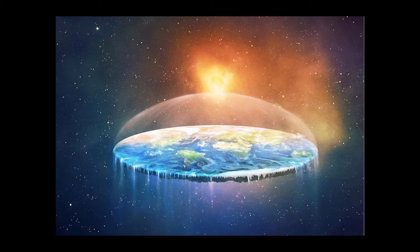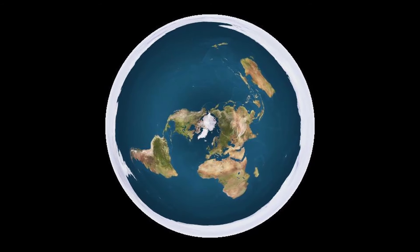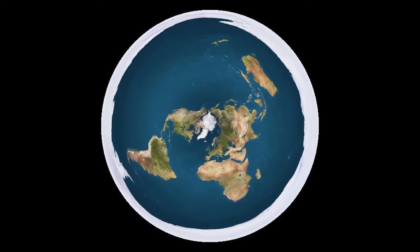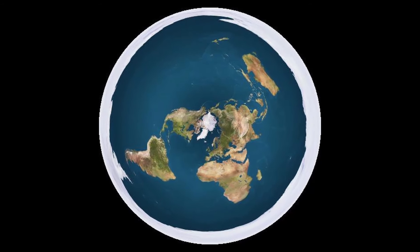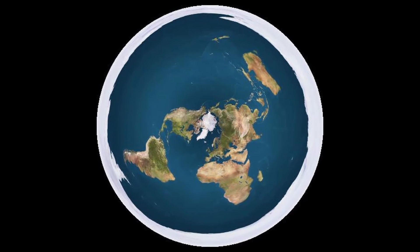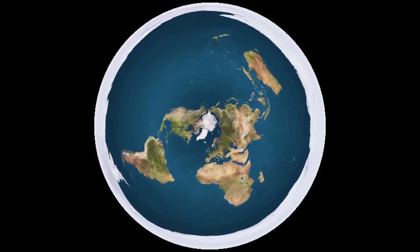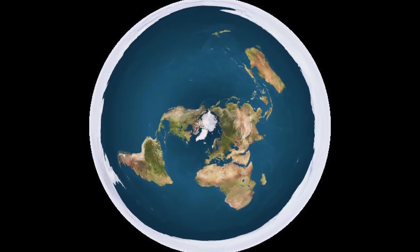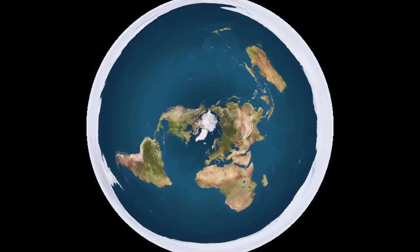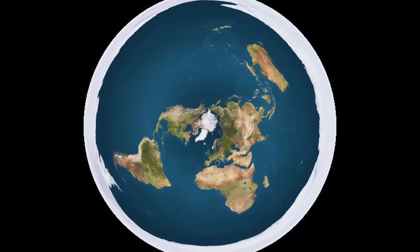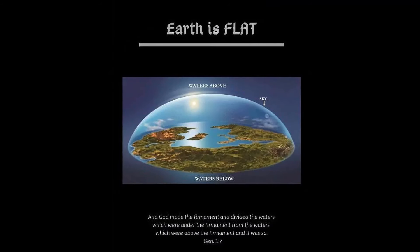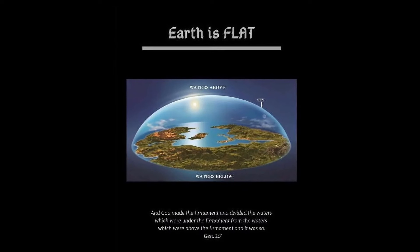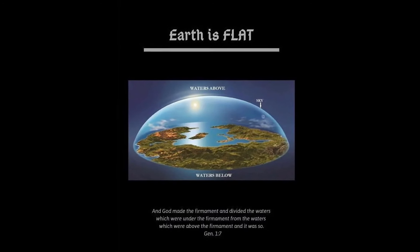Some Flat Earth believers claim that gravity is an illusion, and that objects fall due to the disk accelerating upwards through space. The theory suggests that the Sun and Moon are small objects circling above the Flat Earth, creating day and night cycles.